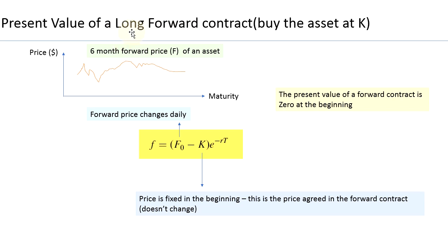Remember, when we say long, that means we are going to buy the underlying — we are going to buy the asset. Let's say it is now January and you want to purchase in December, in 12 months time. So you enter into a contract and that price is fixed. We refer to it by the letter K. So that price is fixed — assuming you are in January now and you want to purchase it in 12 months time in December, and you have entered into a contract.